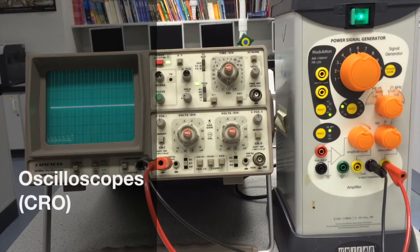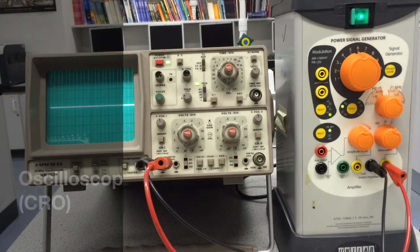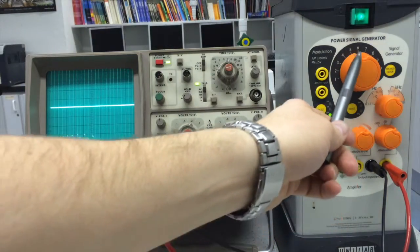This is a video about oscilloscopes. This is a signal generator which is producing the signal that I'll be analyzing. It's set to 6,000 Hertz.